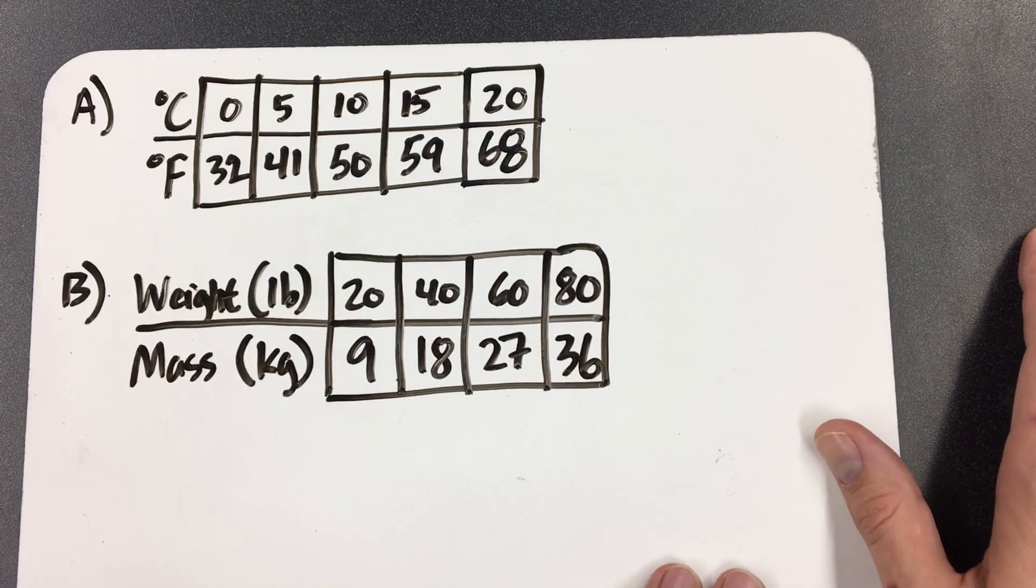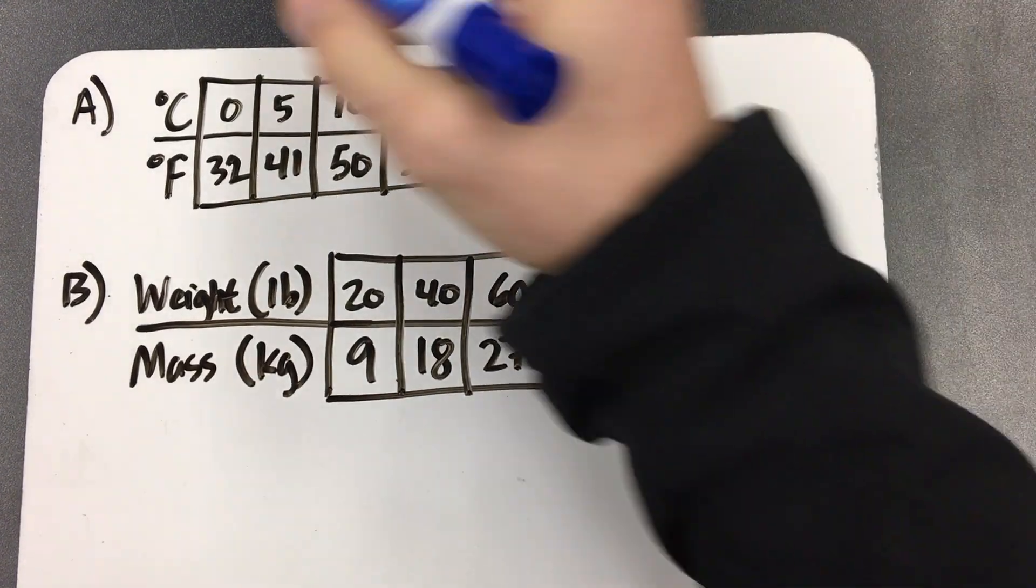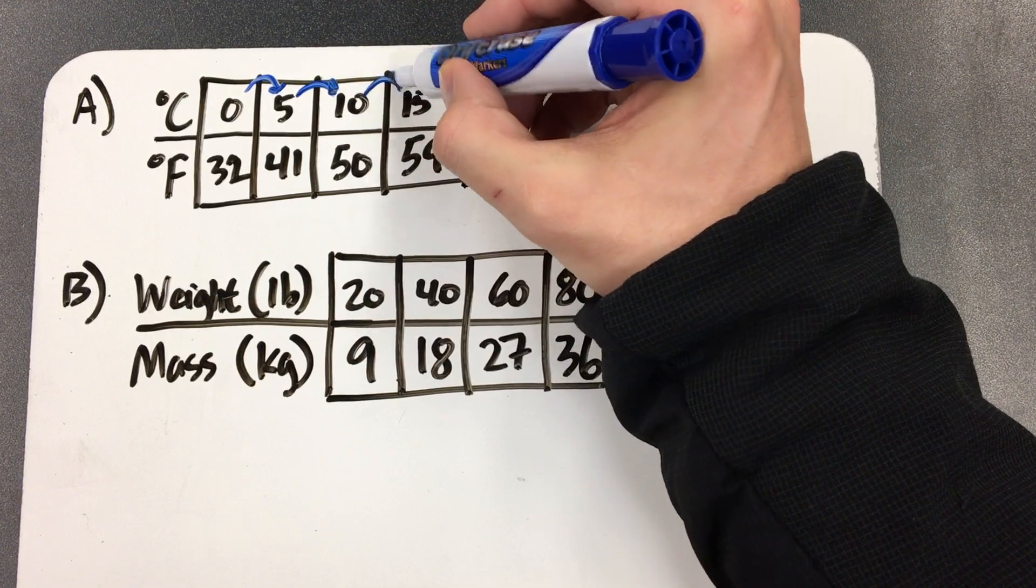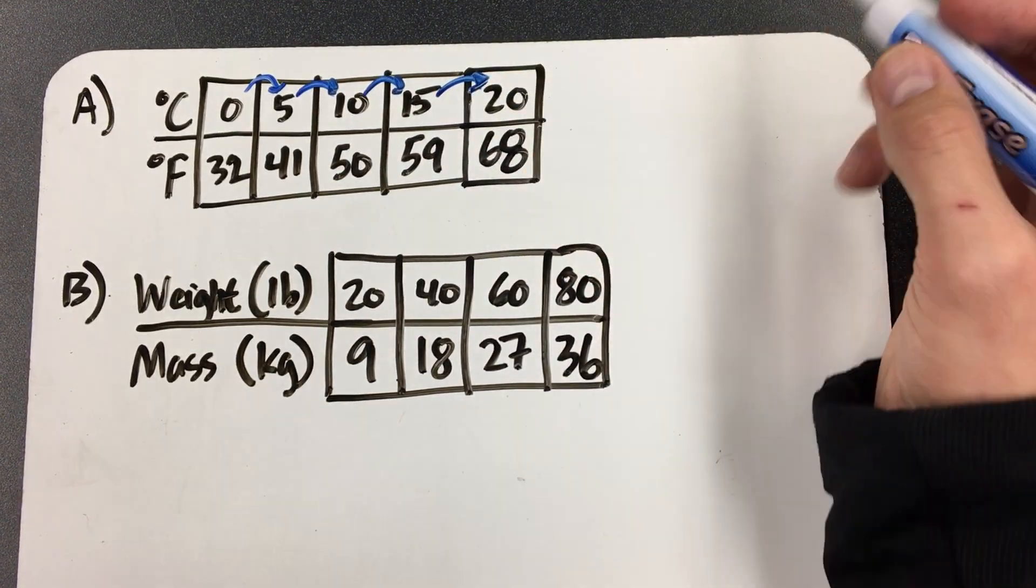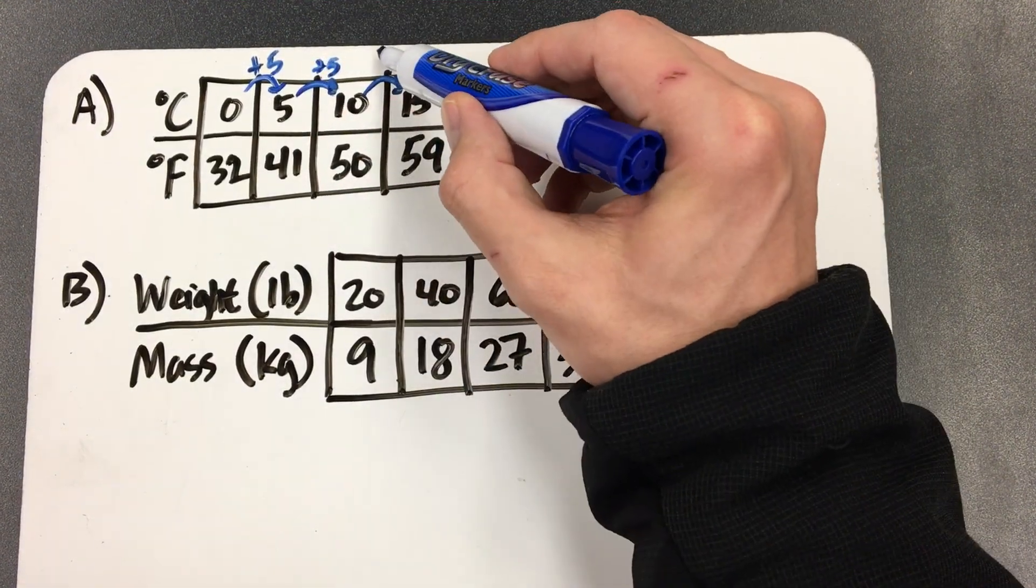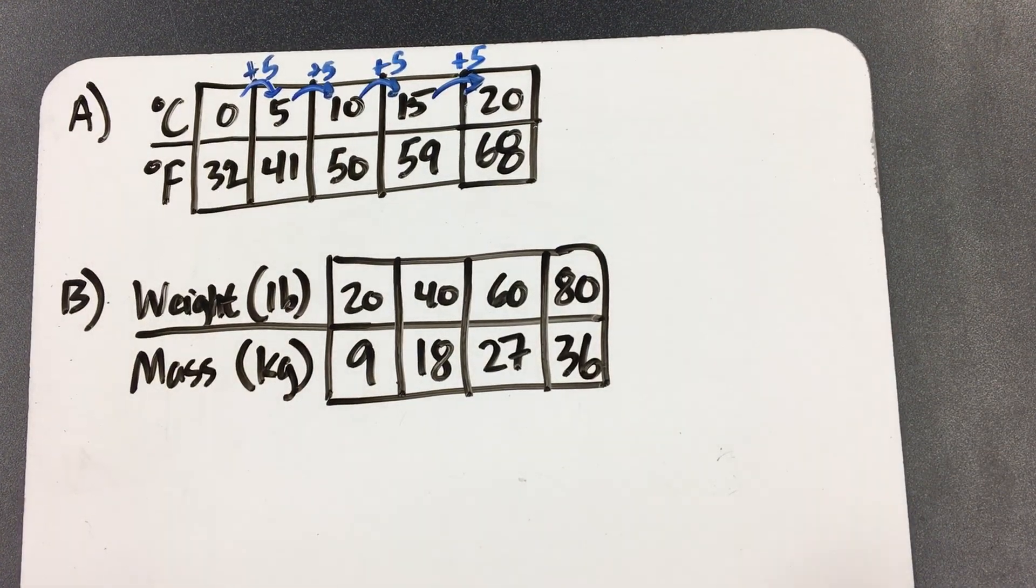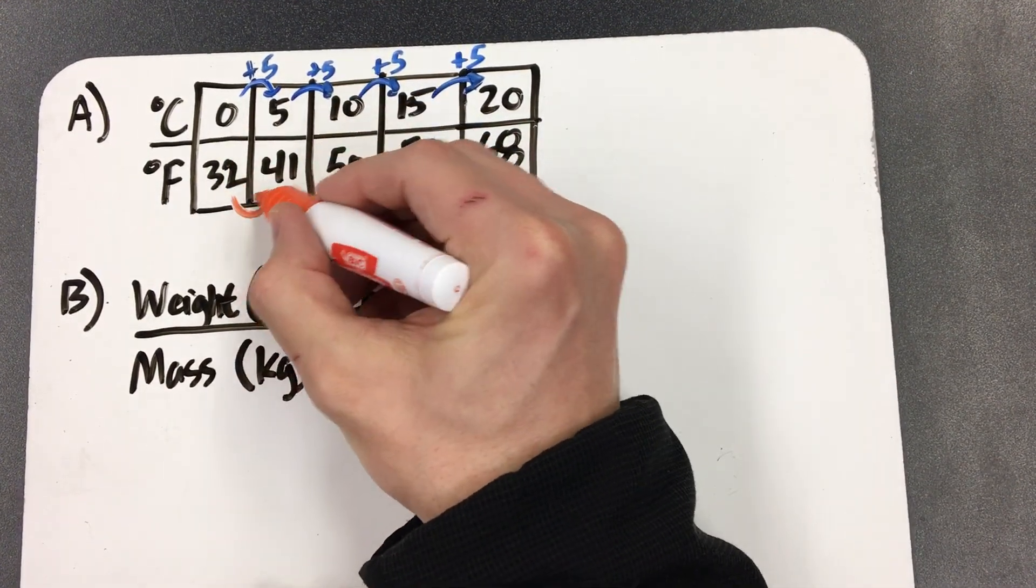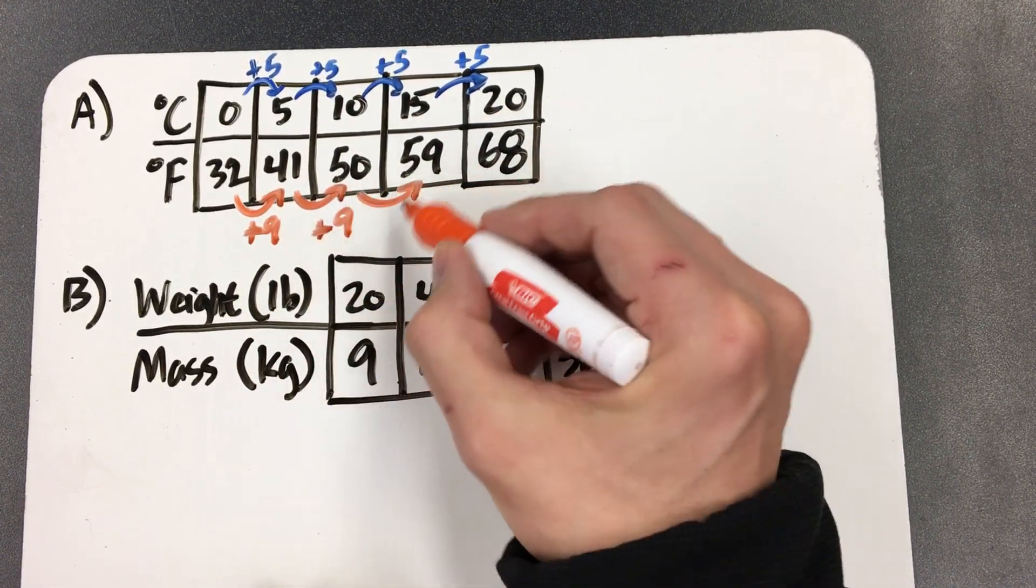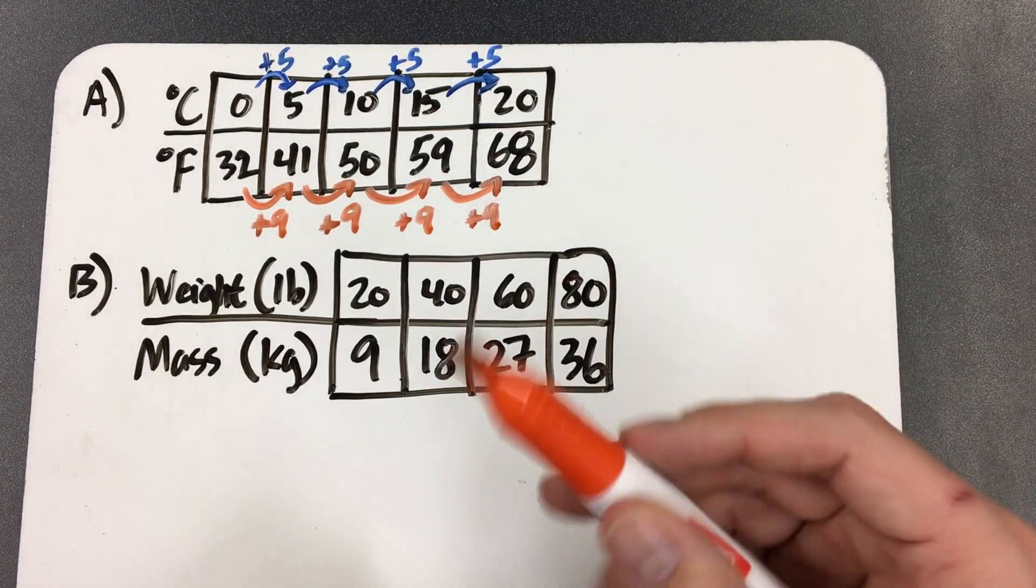I'll give you a quick little chance to refresh our brains. Remember what we did yesterday? We looked at the pattern. Is this a consistent pattern from 0 to 5, from 5 to 10, from 10 to 15, from 15 to 20? That is a consistent pattern. It's adding 5 every time. Is it a consistent pattern down here with the Fahrenheit? 32 to 41, that's adding 9. 41 to 50, that's also adding 9. 50 to 59, that's adding 9. From 59 to 68, that's adding 9.